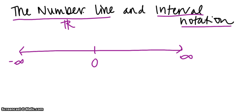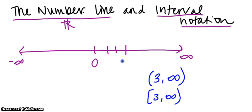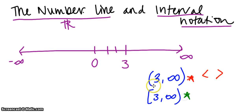We want to talk about interval notation. If I want to talk about a certain set of numbers, I might say I want everything from 3 to infinity. A parenthesis is the same thing as writing strictly less than or strictly greater than. Whereas a bracket is the same as writing less than or equal to, or greater than or equal to.